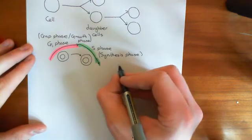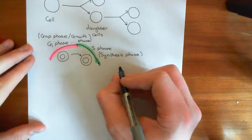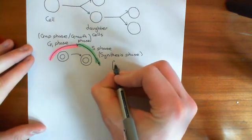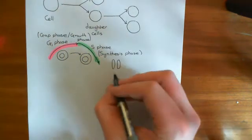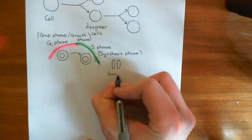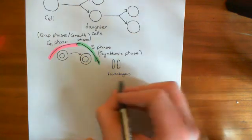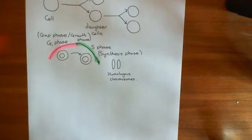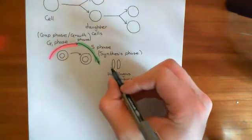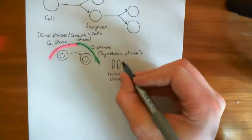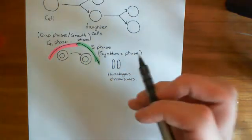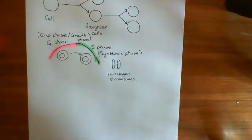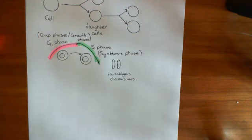One homologous chromosome comes from your mother and one from your father. They have the same genes, but they're not identical — you may have different alleles of the genes. They have different sequences of organic bases and make slightly different proteins, although overall they make similar proteins doing similar jobs. That's the concept of homologous chromosomes.